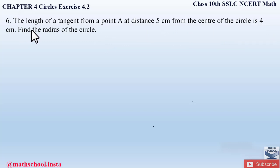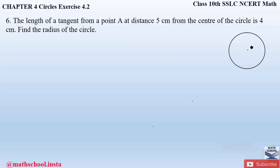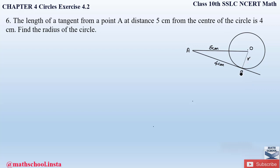Here they have given us the length of the tangent as 4 centimeters, drawn from the circle, and the distance between the point A and the center is 5 centimeters. Let us draw the figure according to the question. This is a circle with center O. We draw a tangent to the circle from point A — the length of this tangent is 4 centimeters, and the distance from the center O to point A is 5 centimeters. We draw the radius from the center to the tangent, and we name the point of contact as B.